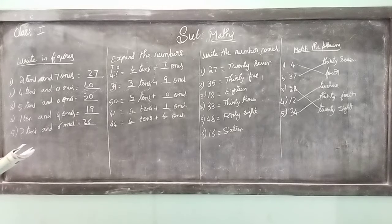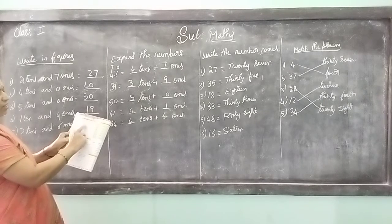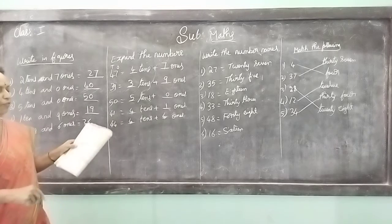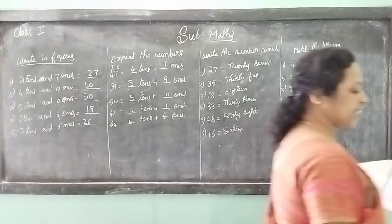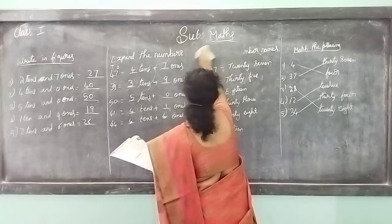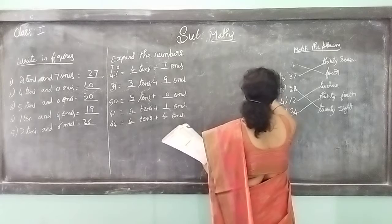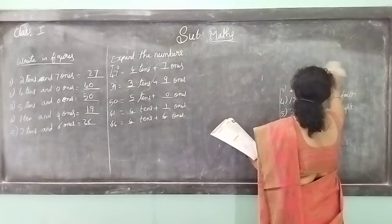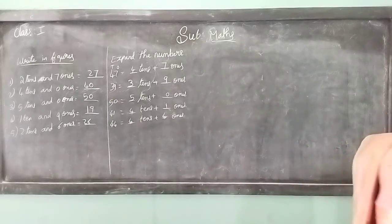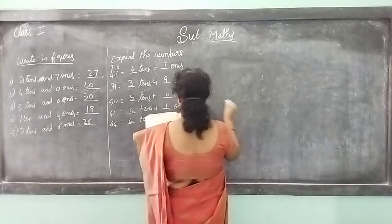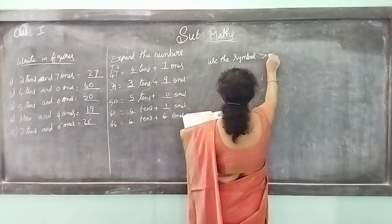So fill in the blanks. Coming to page number 56. Fill in the blanks - you see the numbers 1, 2, 3, 4, 5, 6, 7, 8, 9, 10, 11, 12 - like that, up to 50. You should write the numbers. Then comparisons of numbers using symbols - greater or lesser, you have to complete.